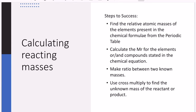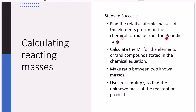Hello everyone, today we are learning about calculating reacting masses. Steps to success: firstly, you need to know how to find the relative atomic mass of the element present in the chemical formula from the periodic table — we did this last week. Next, you need to know how to calculate the Mr, which means the relative formula mass or relative molecular mass, for the elements and compounds stated in the chemical equation.